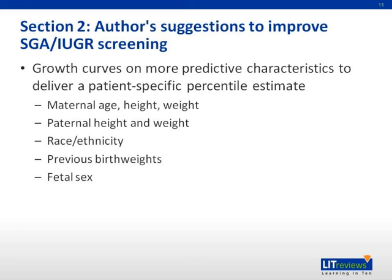The author's suggestions to improve screening methods are quite effective. There are several different factors which play a part in determining whether a fetus is classified as SGA or IUGR — such as maternal age, height, weight, paternal height and weight, race, and ethnicity. The author makes a strong point that if we account for these factors, we can arrive at growth curves that are more predictive of percentile estimates, and by doing so, we will be better able to determine whether intervention is likely to benefit the outcome.